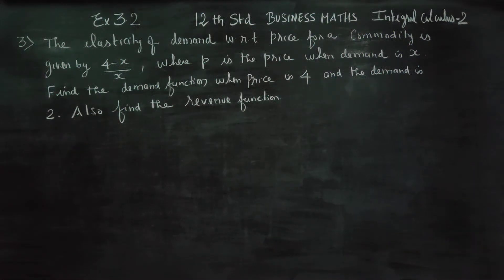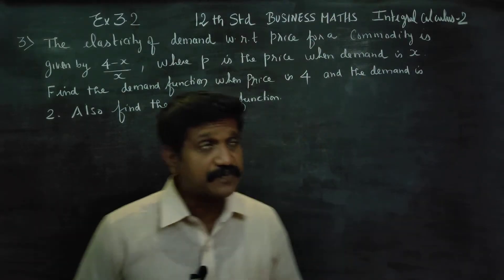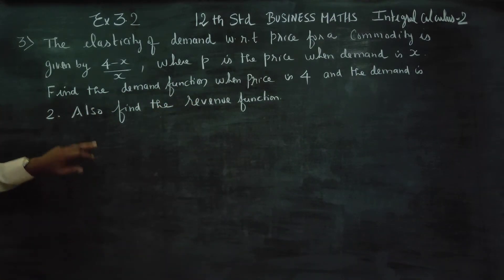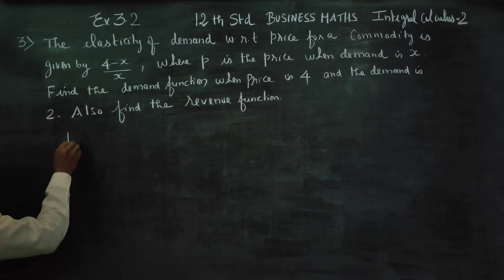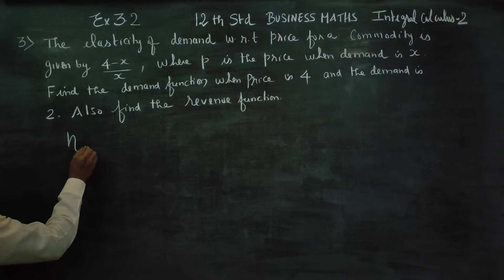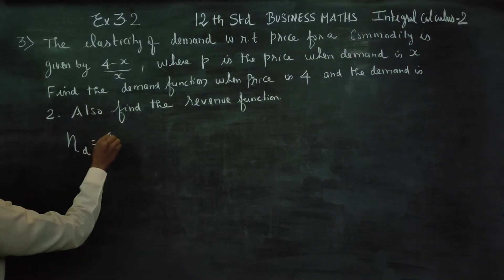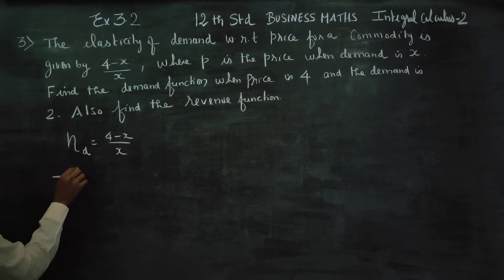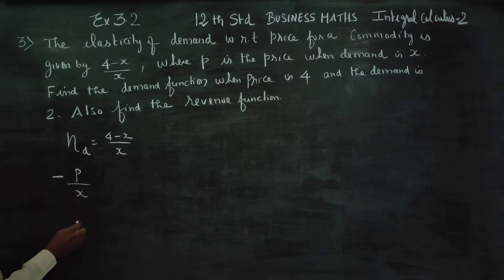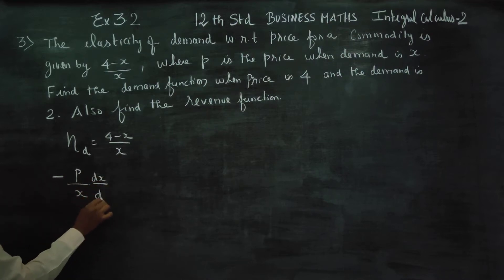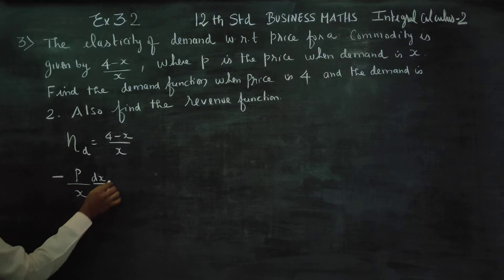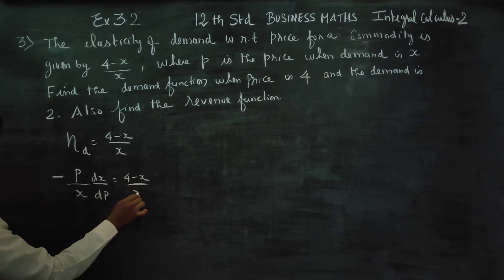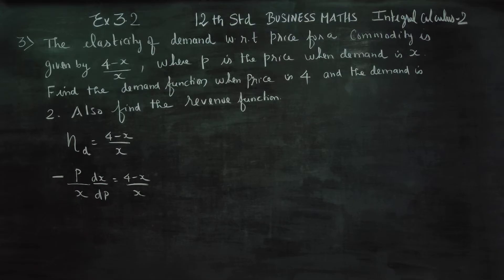Dear 12th standard business mathematics students, in exercise number 3.2, sum number 3. The elasticity of demand with respect to price is given by: elasticity of demand equals (4 minus x) divided by x. The formula for elasticity of demand is minus p by x times dx by dp.